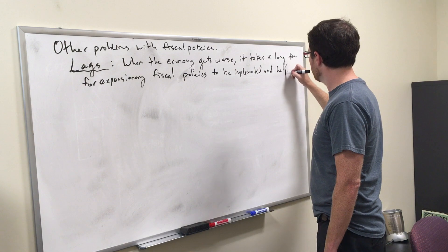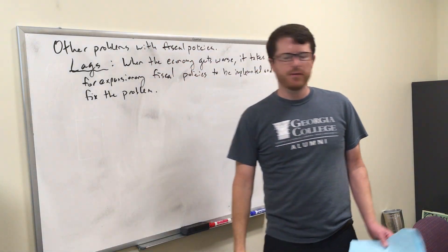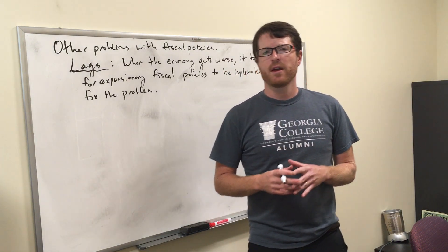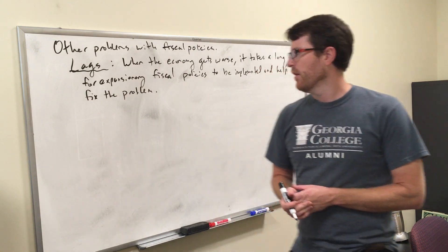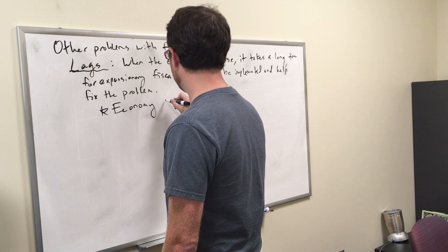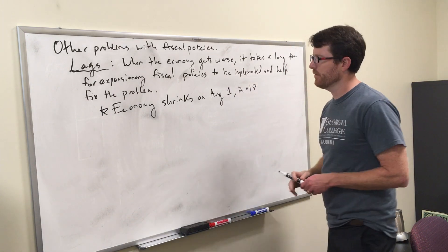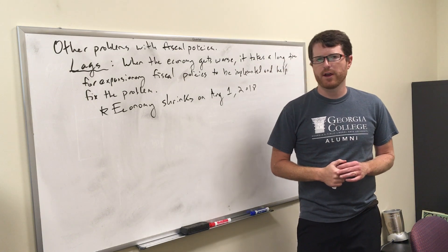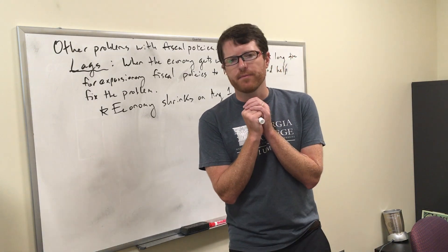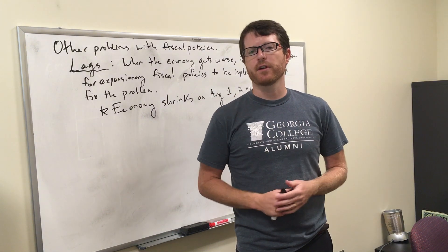If real incomes decrease, how is that going to affect the government? The number one source of government revenues is income taxes, so the result is that income taxes decrease. To be clear, this is not expansionary fiscal policy — I'm not saying tax rates are decreased or that the government goes in and decreases taxes. Rather, there are just fewer people working, so the government is just not getting as much money. If unemployment goes from 4.5% to 7%, you just have a lot fewer people working, so tax revenues go down.